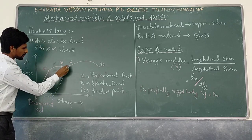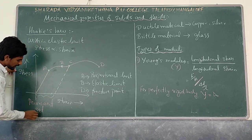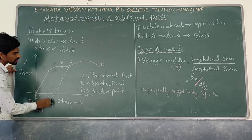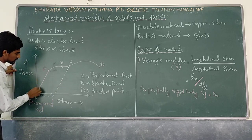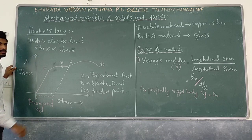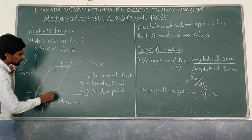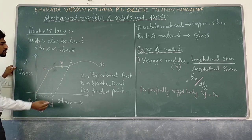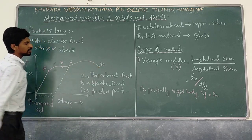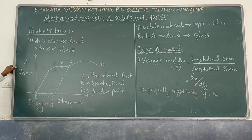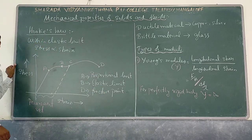After the elastic limit, up to point C, there will be some permanent strain in the body. Beyond point C, you cannot recover the original shape. At point D, there will be a break in the material — so D is called the fracture point.